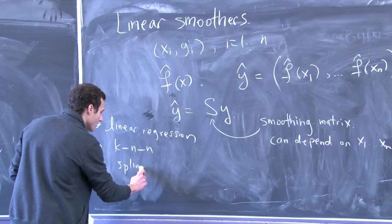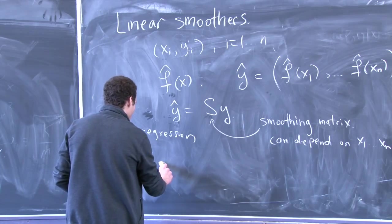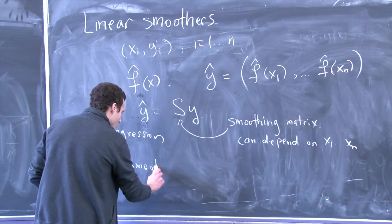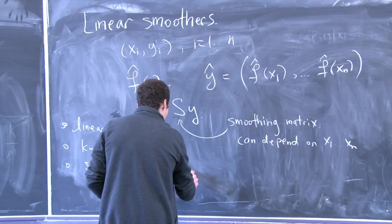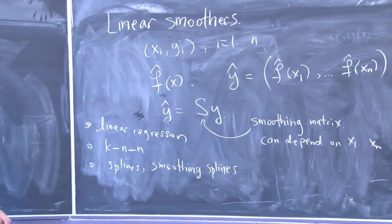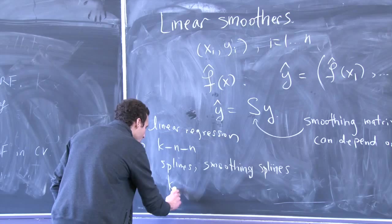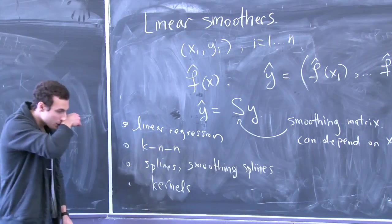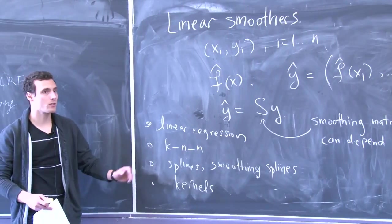Splines and smoothing splines — whether or not the knots are fixed, or smoothing splines where they're placed at every x point — that's also a linear smoother. It's true for both smoothing kernels and Mercer kernels, so both senses of the word 'kernels.' And local polynomial regression — everything we've learned falls into this class.